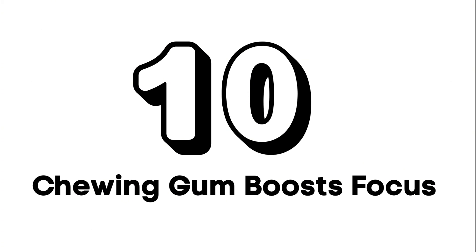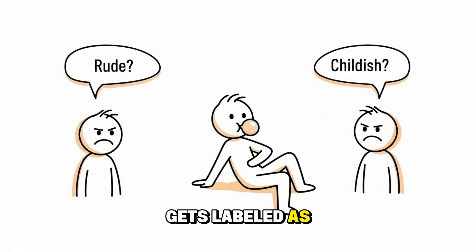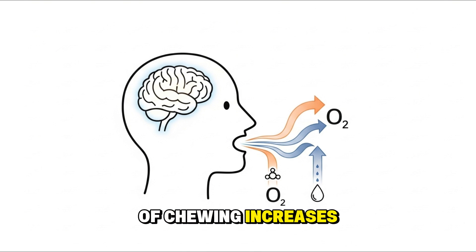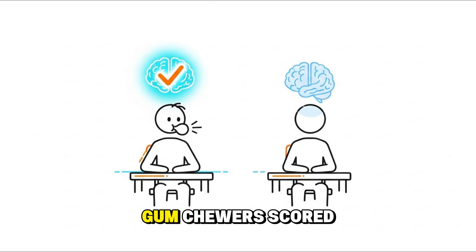Number ten: Chewing gum boosts focus. Chewing gum often gets labeled as rude or childish, but science says it's surprisingly effective for the brain. The simple act of chewing increases blood flow, delivering more oxygen and glucose to brain regions responsible for attention and memory. In one study, gum chewers scored significantly higher on focus tests than those who didn't.